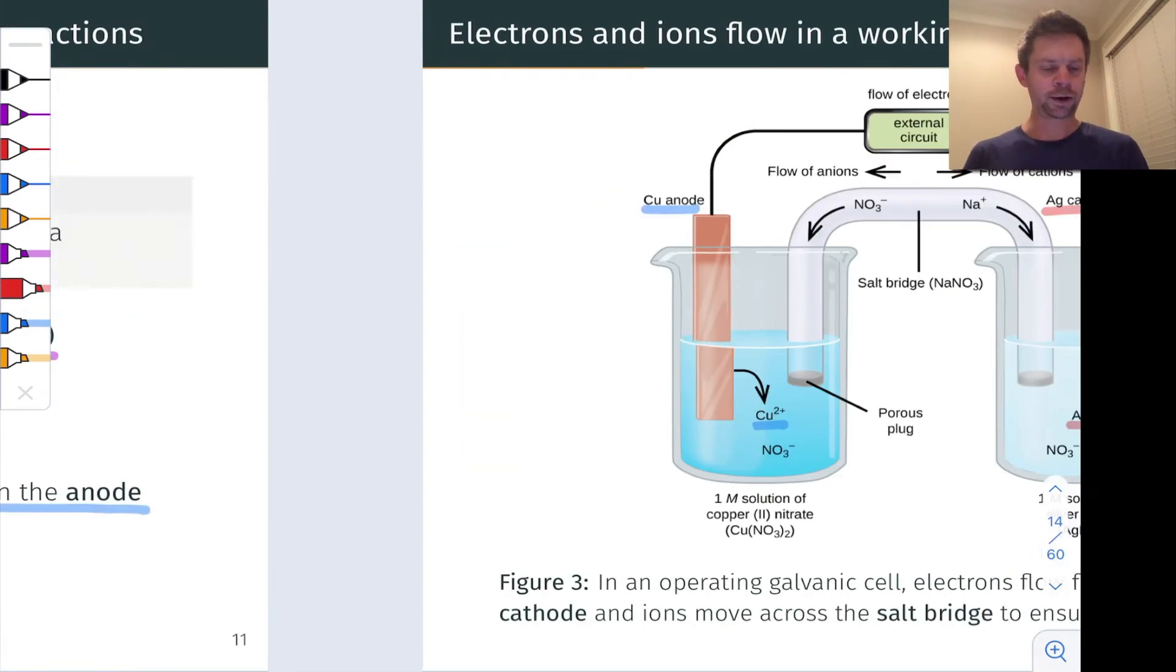If we're going to reduce Ag plus to Ag metal, we need a source of electrons to do that. That can come from copper metal, but those electrons have to travel across a wire to go from the copper side to the silver side. This is the beauty of a galvanic cell. We can put any external circuit in here, and provided the voltage and current this cell provides are sufficient, we can power an external circuit using this device.